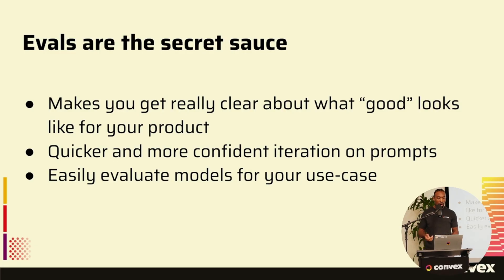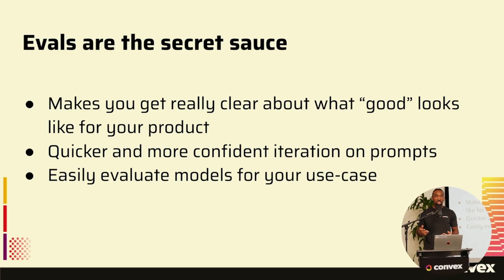Models are always changing. When Sonnet 4 came out, it caused a step-function change in building apps with Chef, and we wouldn't have been able to integrate it into the product quickly if we didn't understand how well it performed. Having evals made it super quick — within an hour or two, we were able to say Sonnet 4 is way better than the other models we'd been using and integrate that into the product.